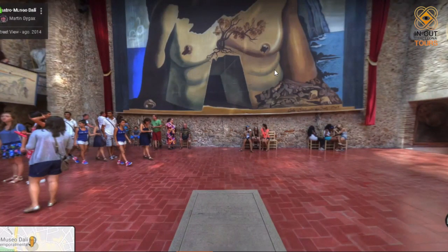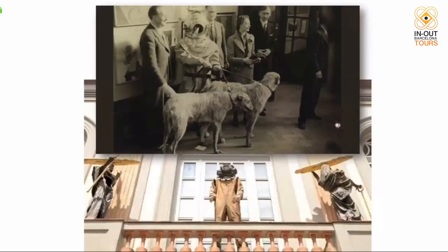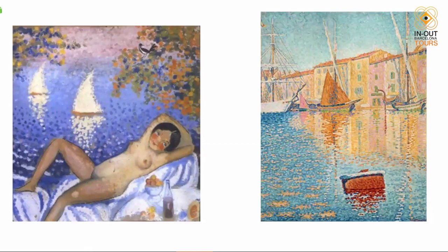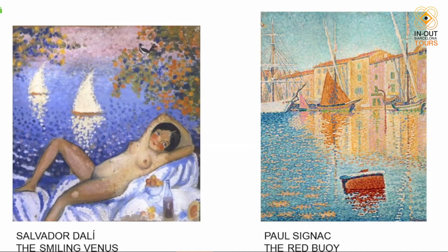Continuing our visit to the museum and looking at some paintings — in the 1920s Dalí was trying many different styles to find his own. He painted Pointillism, as we can see here. One of these paintings is by Dalí and the other is by a French painter called Paul Signac. Which one is Dalí's — left or right? The left one is the correct answer: 'Smiling Venus,' 1921, by Salvador Dalí. The one on the right is Paul Signac's 'The Red Boy,' 1895.